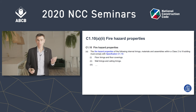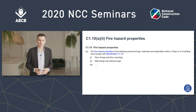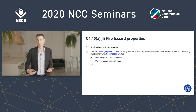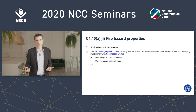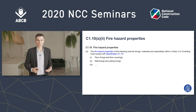They are concurrent requirements. You have to meet your fire hazard properties under C110, which means a group number and other things spelled out in clause C1.10. And in addition to that, you also need to meet your combustibility requirements of C1.9 if your building is of type A or type B construction.